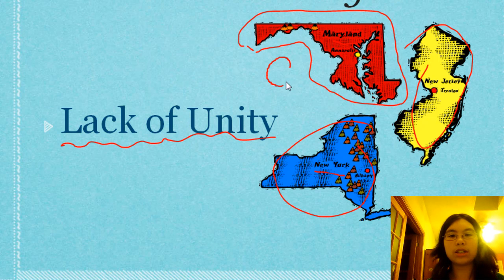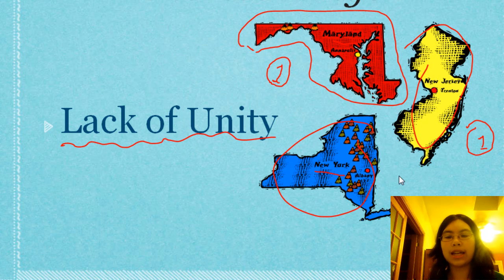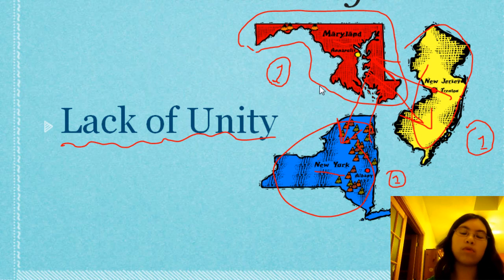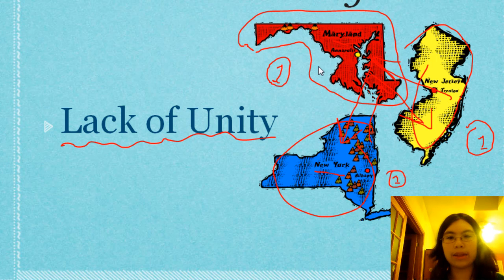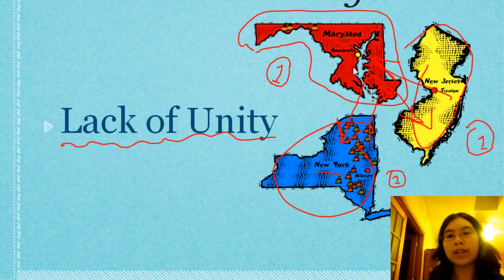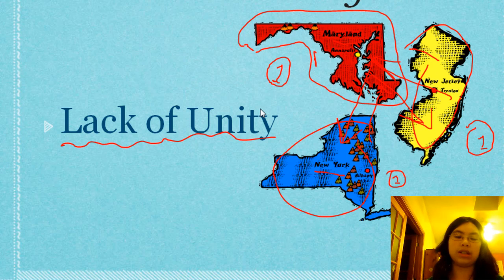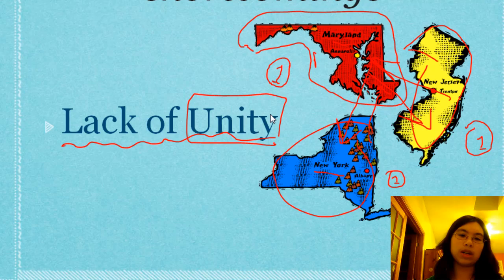One of the big problems was that each state would make its own money. So Maryland would have one kind of coin, New Jersey would have another, and New York would have another, leading to huge problems. Just think of how much of a hassle traveling between states would be — every time you'd need a different form of money and had to be familiar with new rules. And for people involved in trading, states would favor their own, creating interstate trading wars.